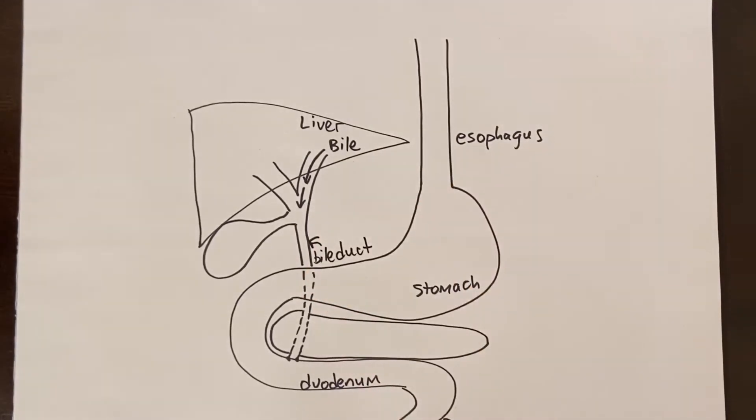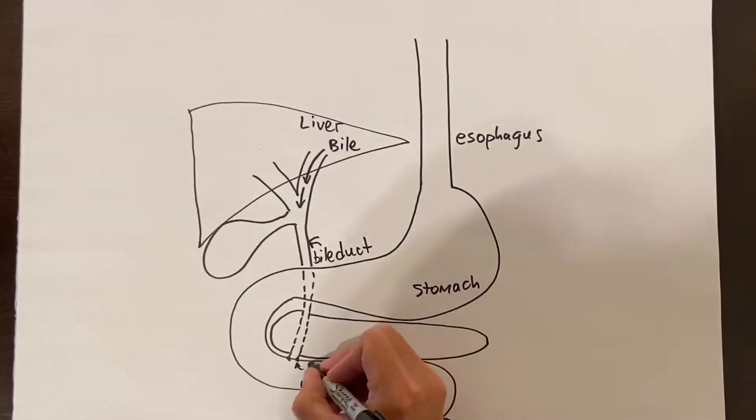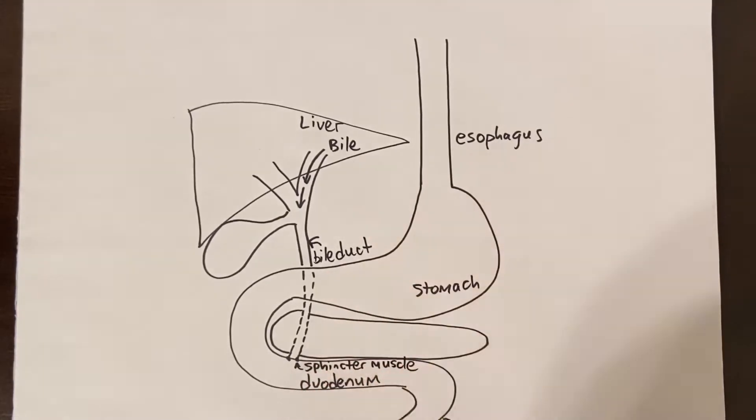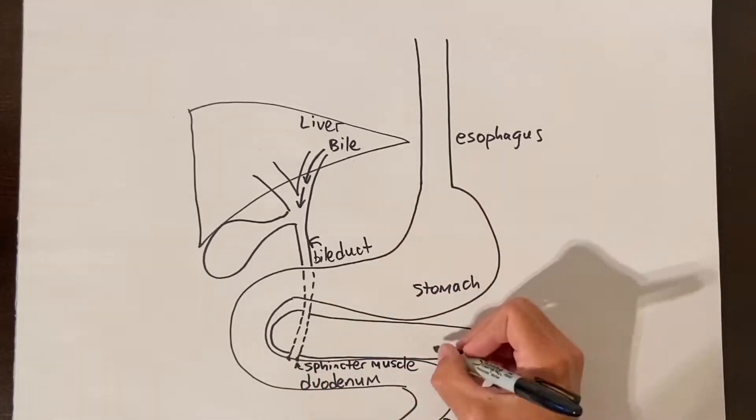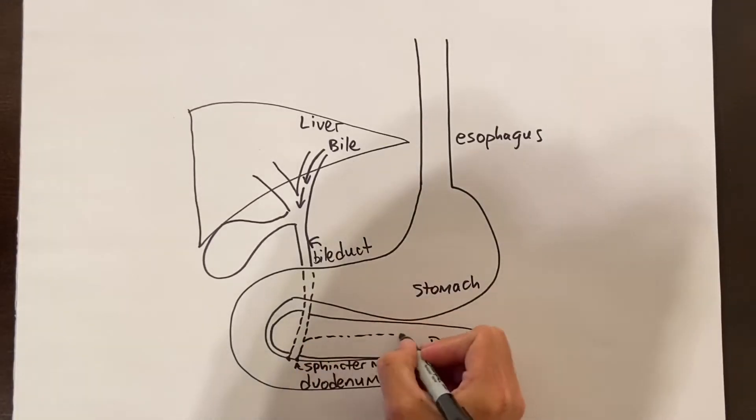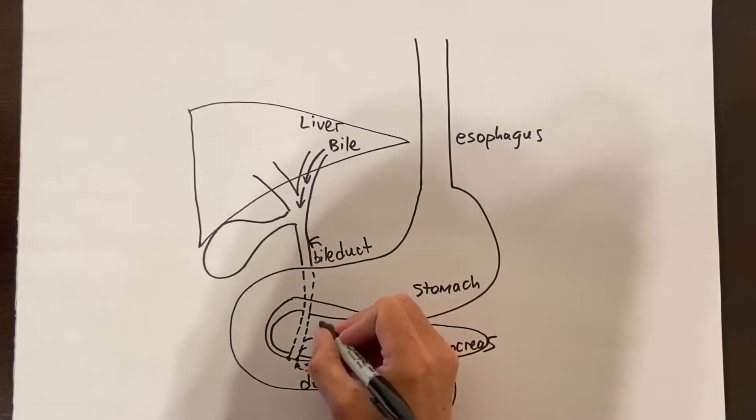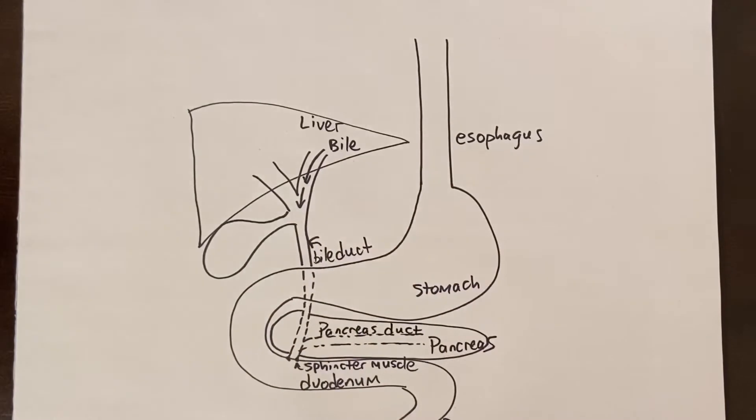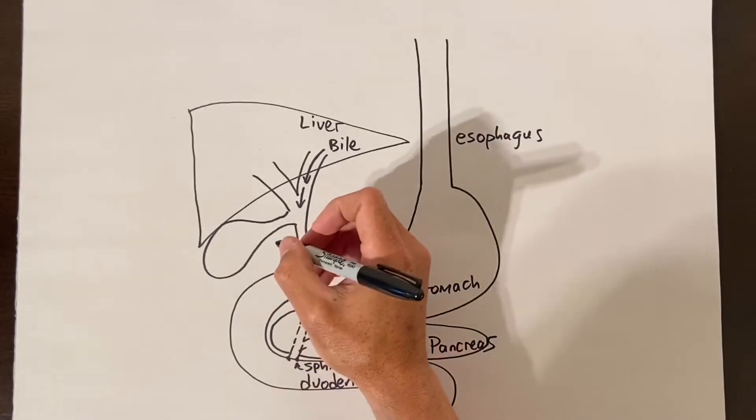The last part of the bile duct actually runs through the pancreas gland which is tucked into the loop of the duodenum and lies behind the stomach. The pancreas also makes pancreatic juice which helps you digest proteins in your food. The pancreatic fluid flows through another small duct called the pancreatic duct. The pancreatic duct drains into the same area as the bile going into the duodenum.